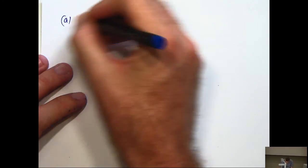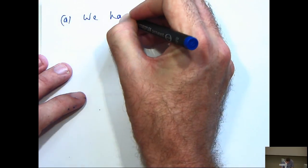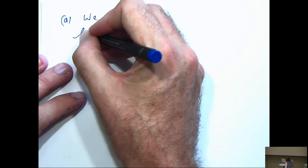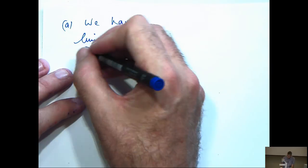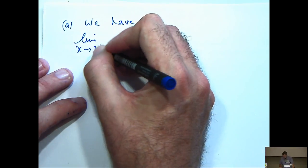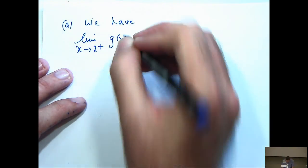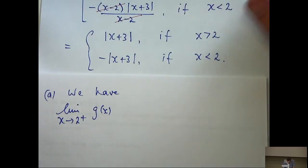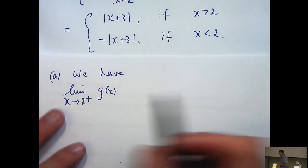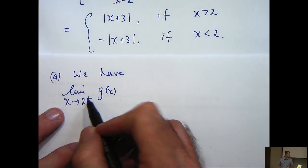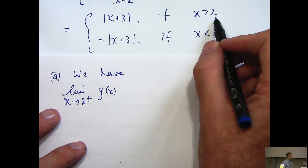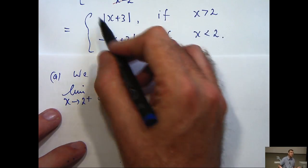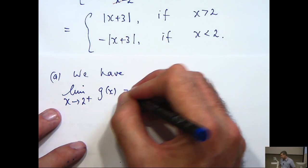Okay, so the first thing we have is in part a, limit as x approaches 2 from the right. Okay, so let's go back to our simplified expression for g. Now as x approaches 2 from the right, it means x is strictly greater than 2. So this is the correct definition of g on this interval.